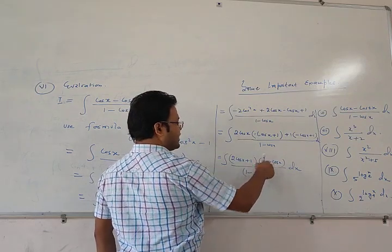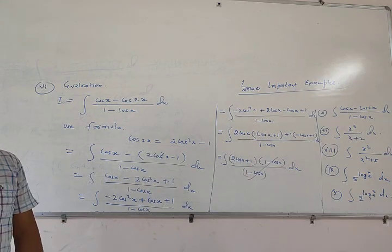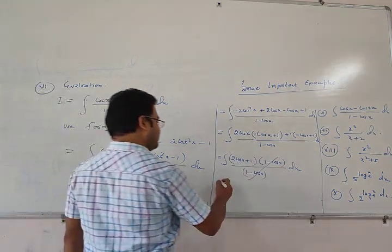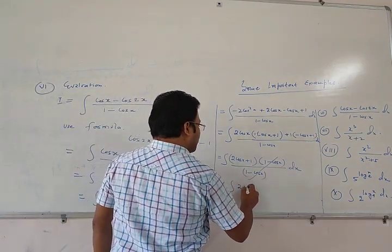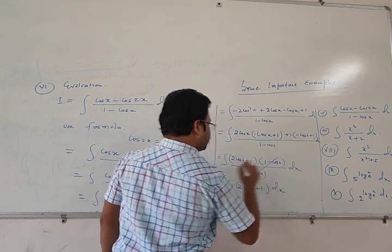Here the term 1 - cos x is same in numerator and denominator, so we can cancel out.